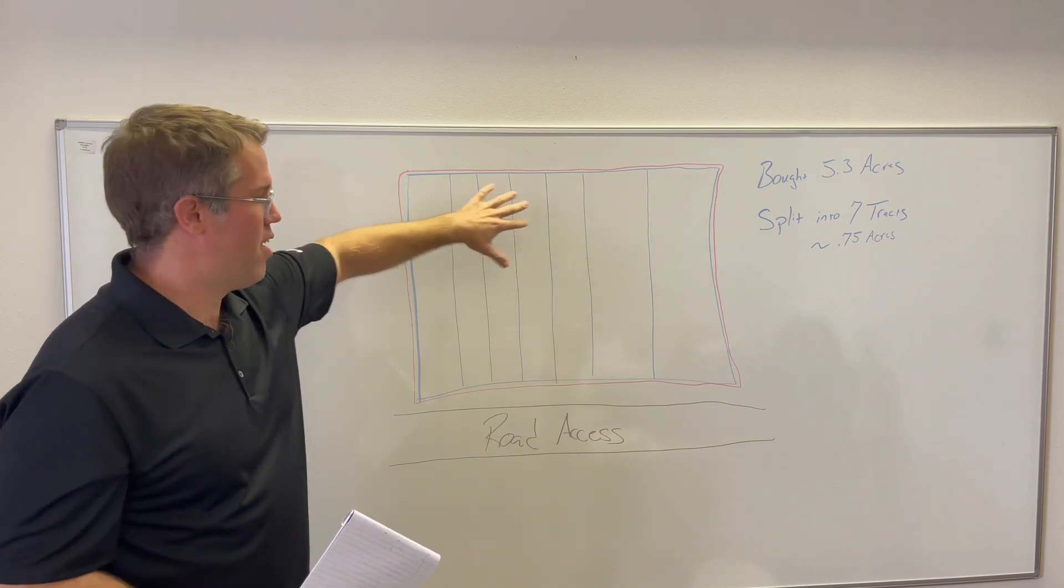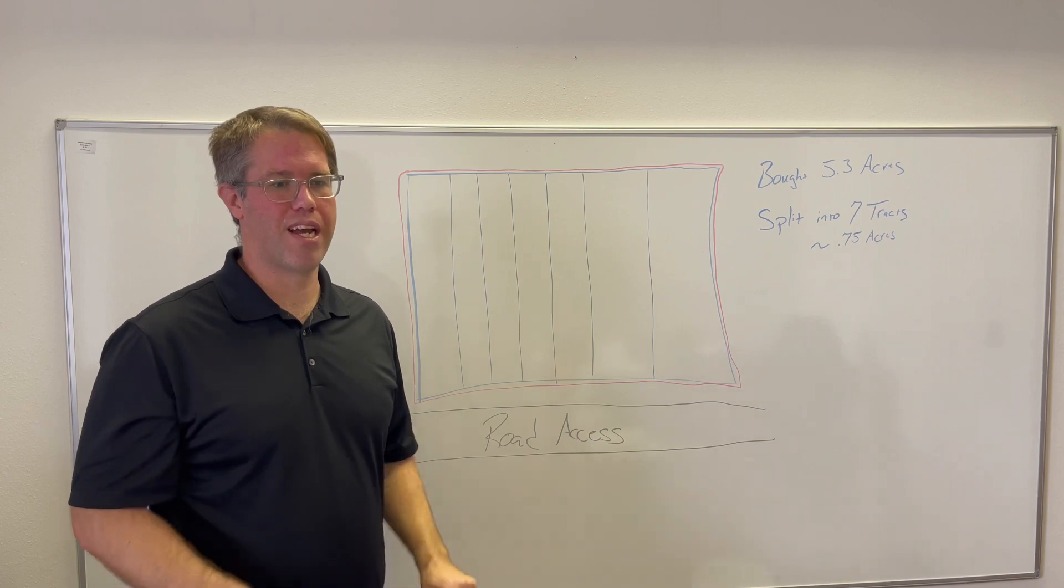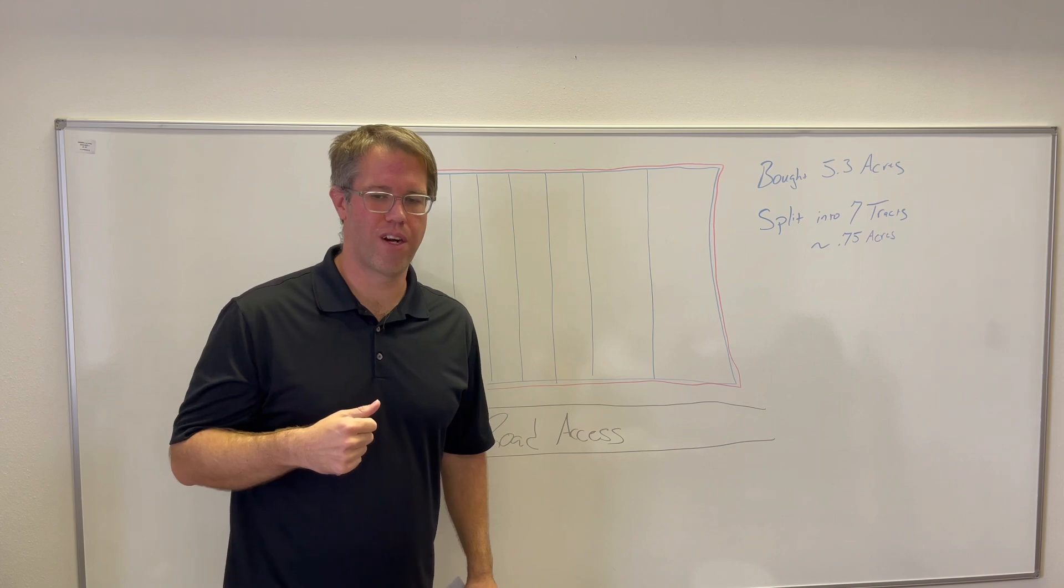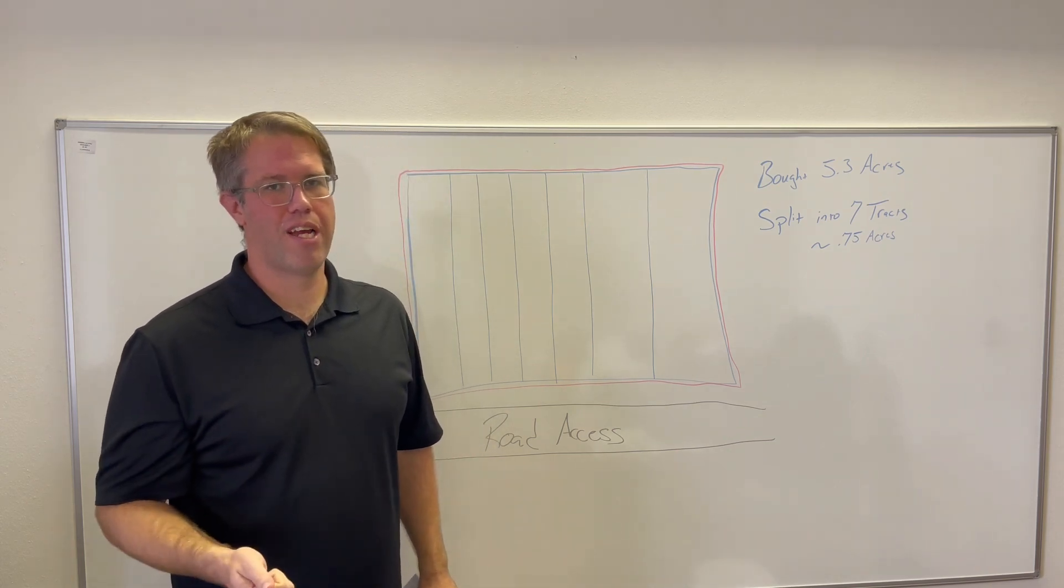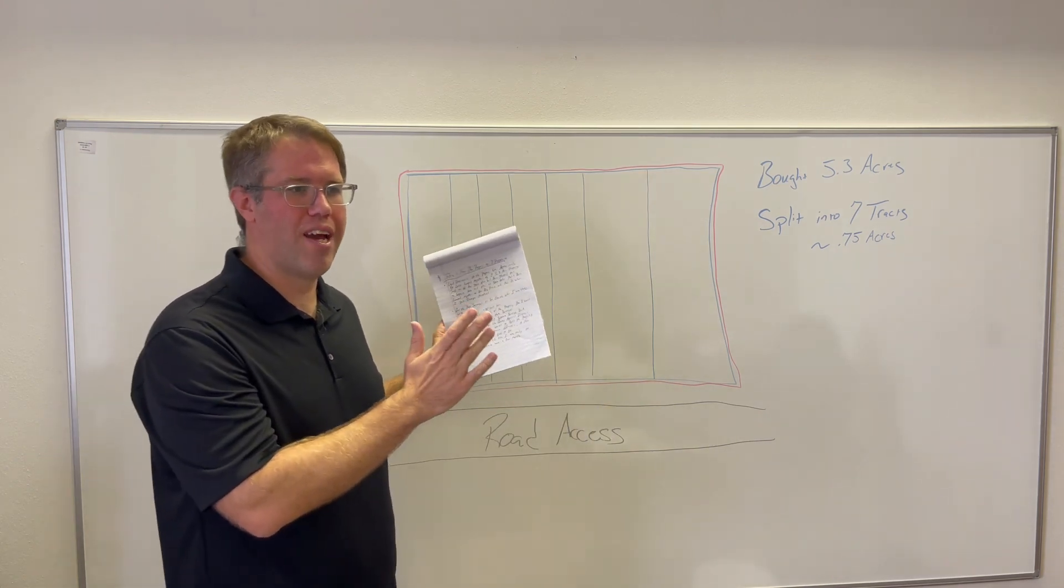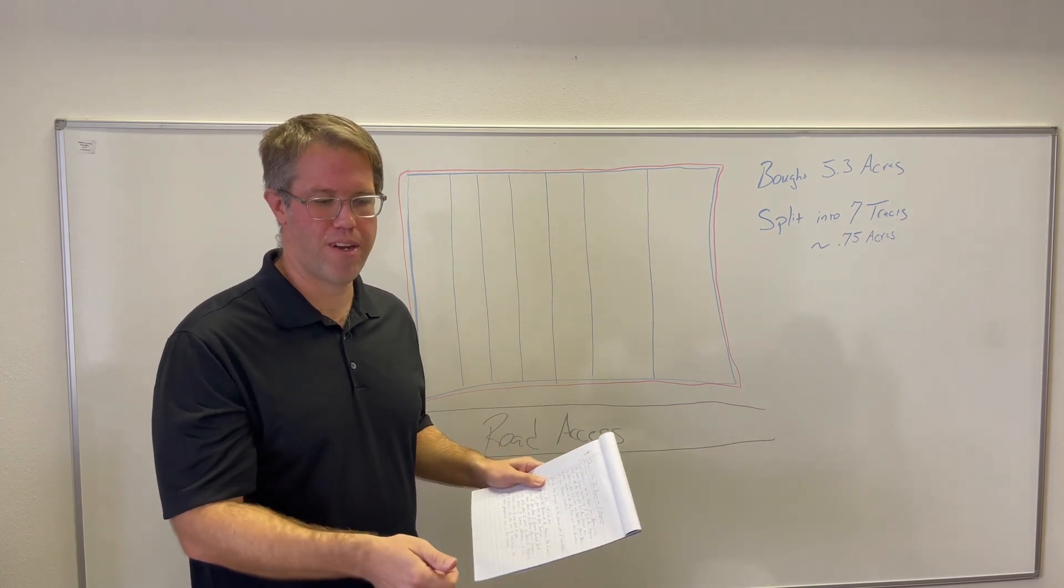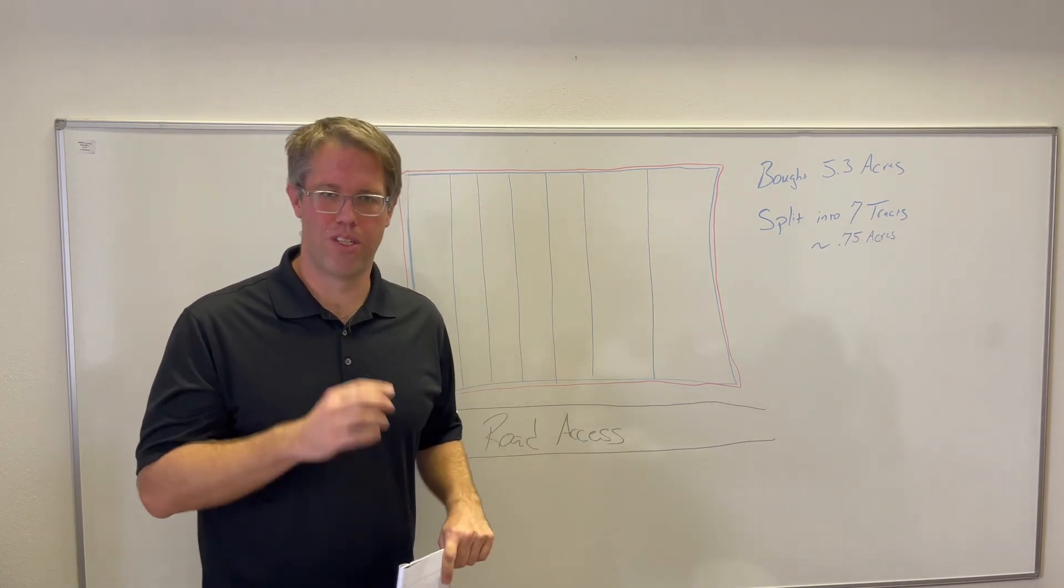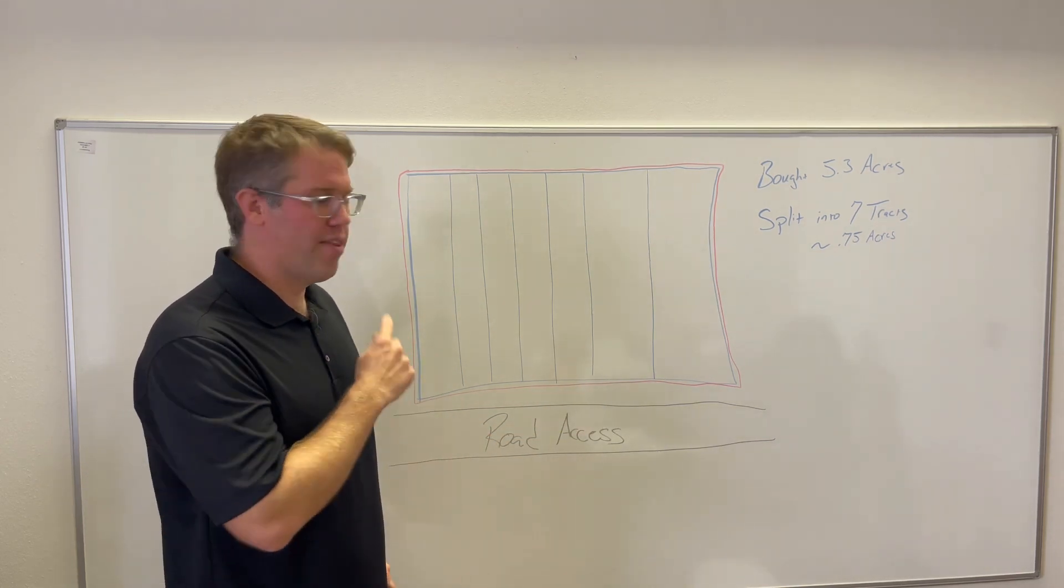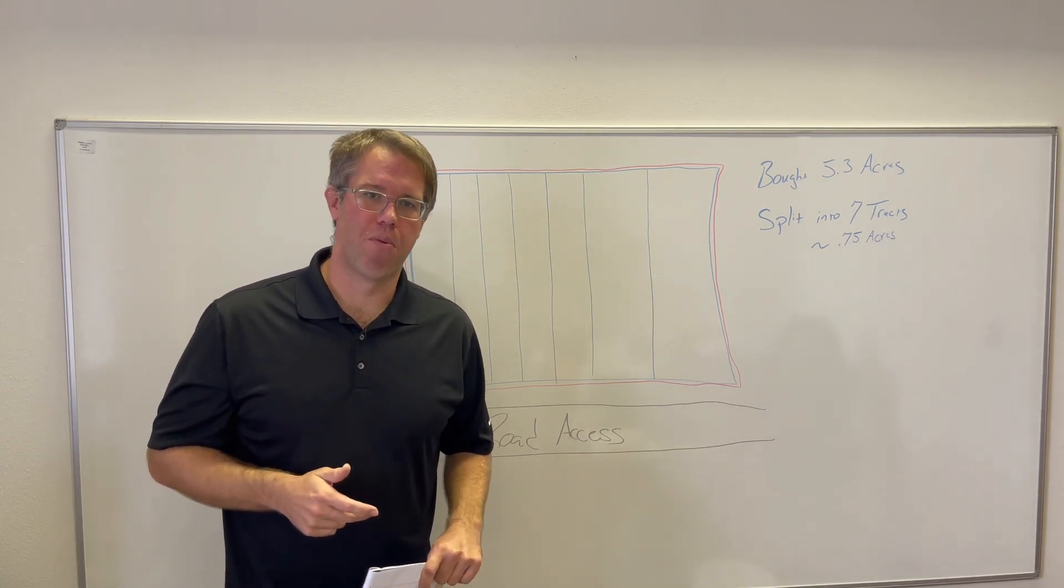I gave that back to the surveyor. They went back in and individually surveyed each of these lots out where the blue lines are basically. Once they got subdivided out, I took those seven separate surveys down to the county appraisal district. I told them I wanted to split that property up. I gave them all the surveys. A couple of weeks later, they got me back all the addresses. I had all the individual surveys and we're basically ready to go to market from there.